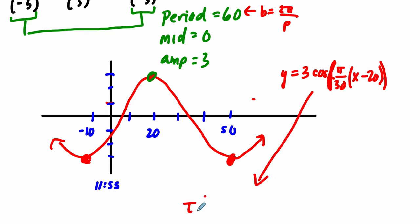Now I think it should work. We'll test it out in a moment, but in their notation it would look like this: 3 times the cosine of π over 30, and then x minus 20.